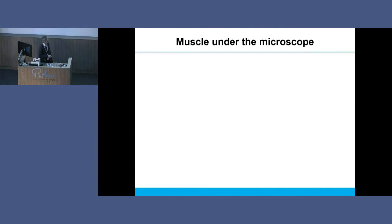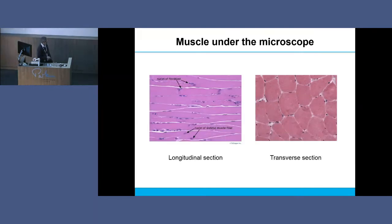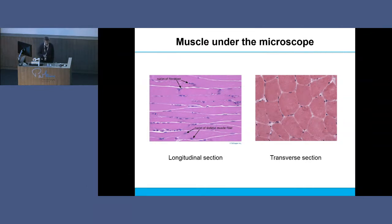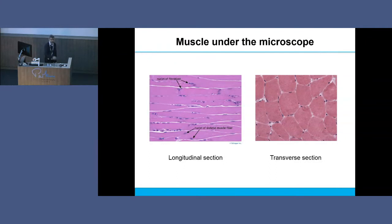Muscle under the microscope. When you look at muscle - this is what the pathologists do - they look at it in longitudinal section: these are the muscle fibers with nuclei on the edges. And this is it in transverse section, cut across. The easiest way to think about muscle is that every time you eat steak or chicken, that's what you're eating - you're eating muscle. So when you next cut your steak across, think that the pathologist does that at a higher magnification.